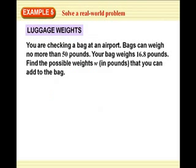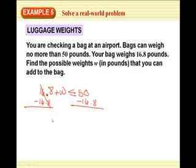Example number five. You're checking a bag in an airport. Bags can weigh no more than 50 pounds. Your bag weighs 16.8 pounds. Find the possible weights, W, and pounds that you can add to the bag. So, your bag, 16.8 plus some other weight, can't be, has to be less than or equal to 50. Alright? So, we would minus 16.8 from this side. Minus 16.8 from this side. Your bag, you can add, borrow, 33.2 pounds. It's got to be less than or equal to 33.2 pounds.